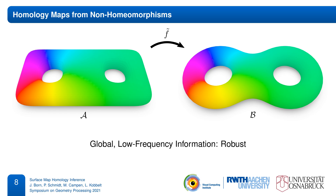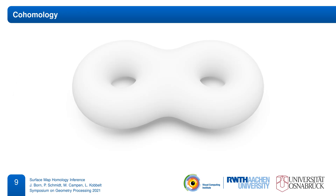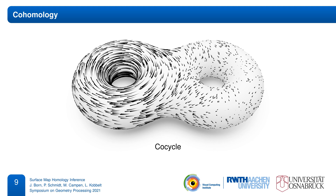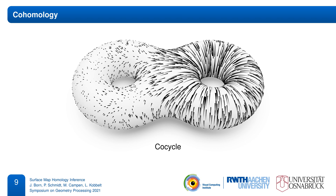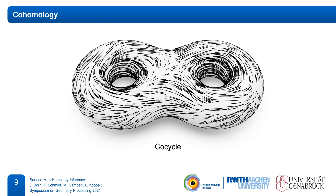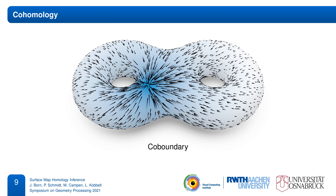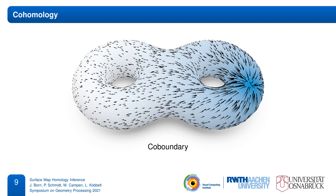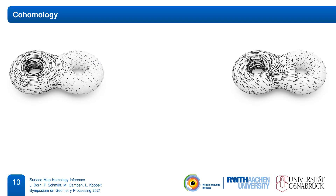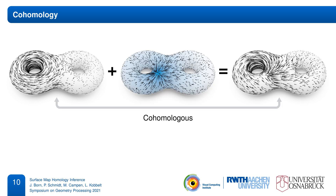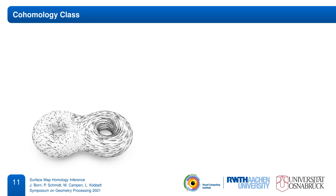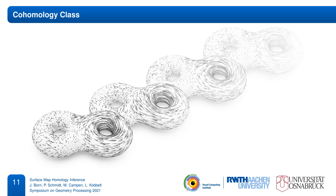We find this representation by switching from homology to its analogous dual concept, which is cohomology. While homology talks about cycles, the objects of cohomology are co-cycles, which are closed one-forms on a surface — you can think of them as curl-free vector fields. The co-cycles that are topologically interesting are fields that flow around handles. But there are also co-cycles that are just gradient fields of some scalar potential; these are known as co-boundaries. We say that two co-cycles are cohomologous if they differ only by some co-boundary, giving rise to the notion of cohomology classes. All elements of one cohomology class are fields with the same global flow behavior around handles.